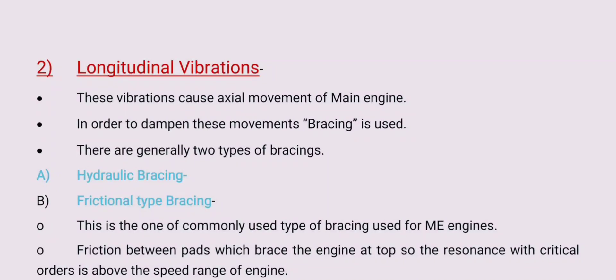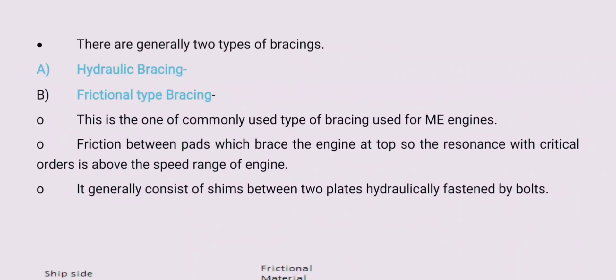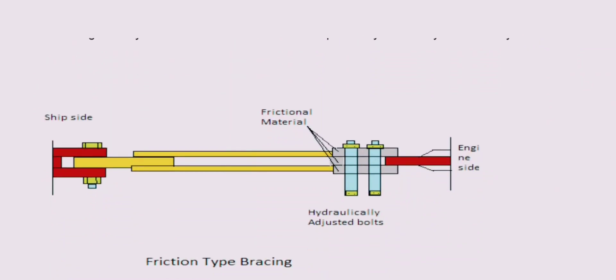Frictional type bracing is the most common type used for main engines. Friction between pads braces the engine at the top, so the resonance with critical order is above the speed range. It generally consists of clamps between two plates, hydraulically fastened by bolts. As seen in the diagram, the main engine side is fastened by hydraulically tightened bolts, which must be checked and hydraulically tested for bolt tightness at specific intervals. Because of this friction, the damping effect takes place.